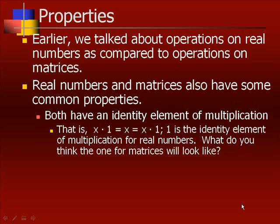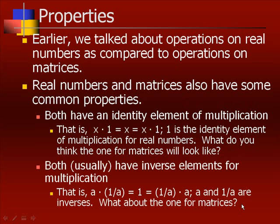Now what do you think the 1 for matrices will look like? Both usually have inverse elements for multiplication. That is, a times 1 over a equals 1, which equals 1 over a times a. We say that a and 1 over a are inverses for real numbers. Note — I said 'usually' because 0 does not have an inverse, since there's nothing we can multiply 0 by to get 1.